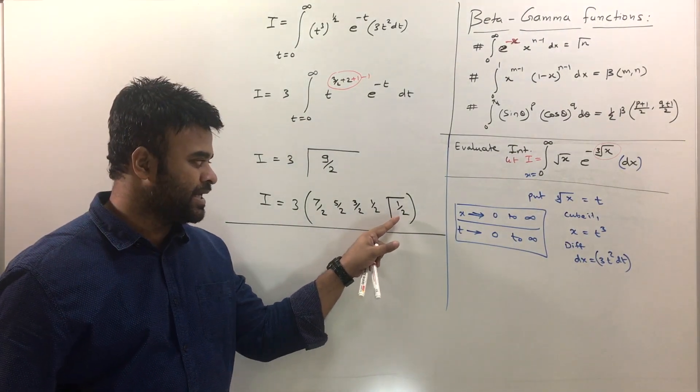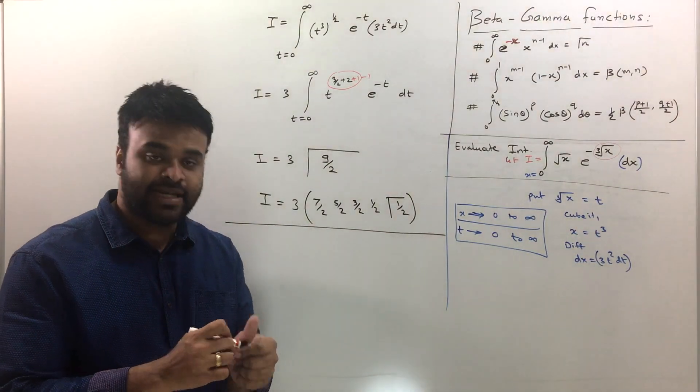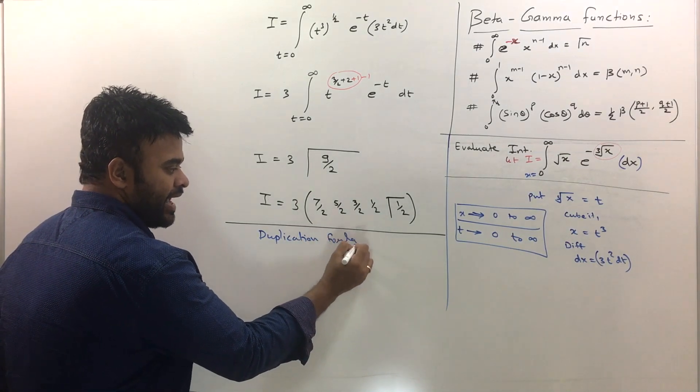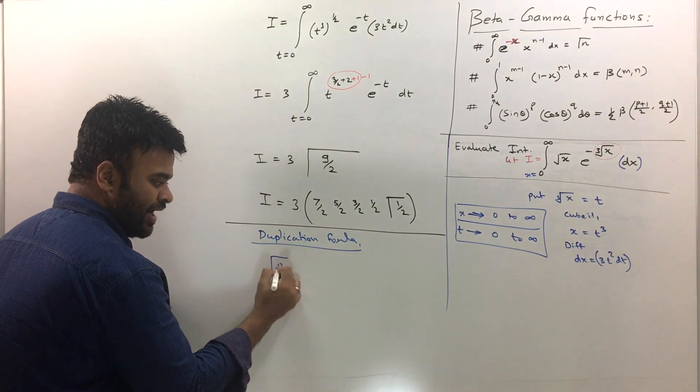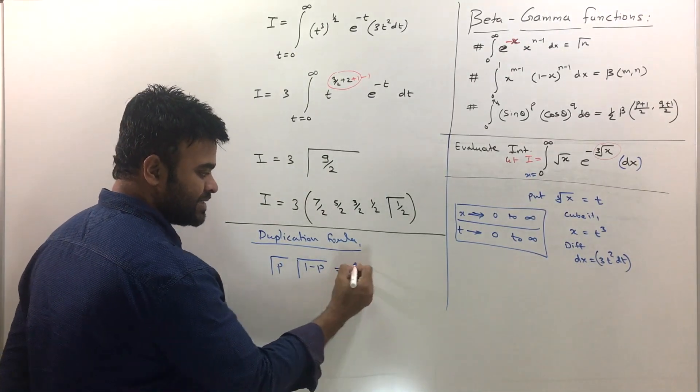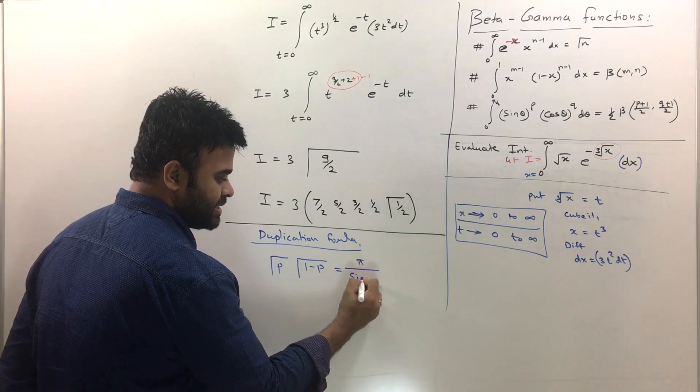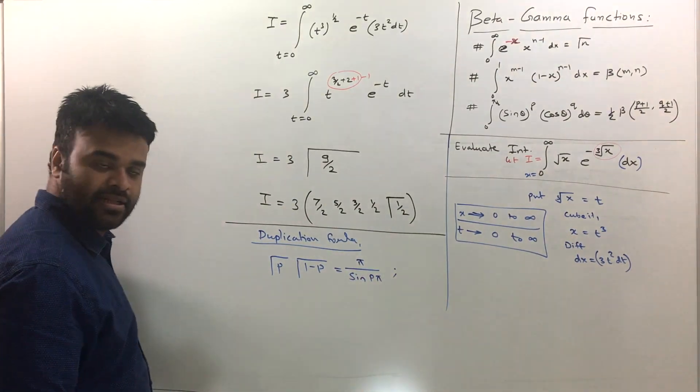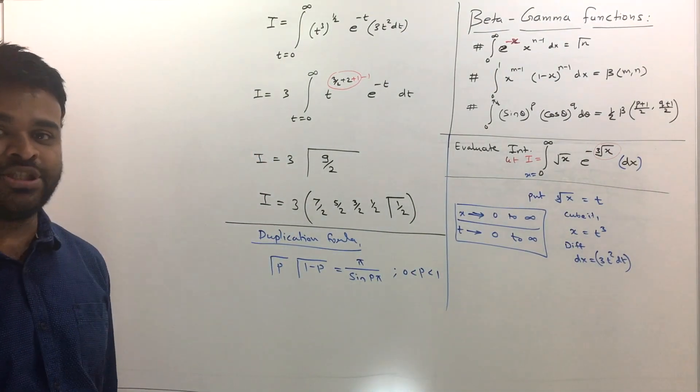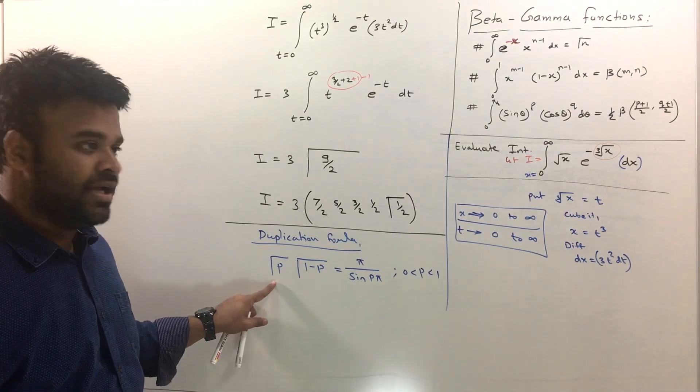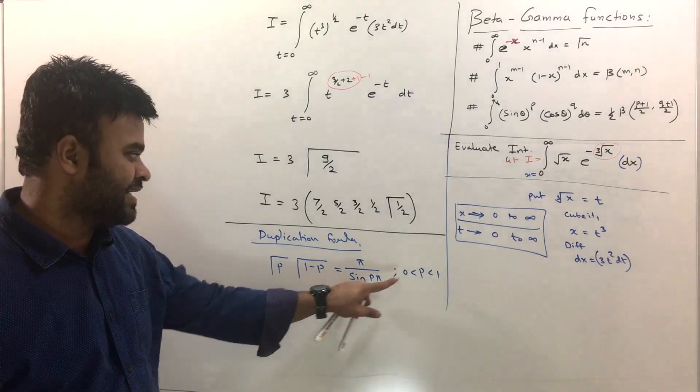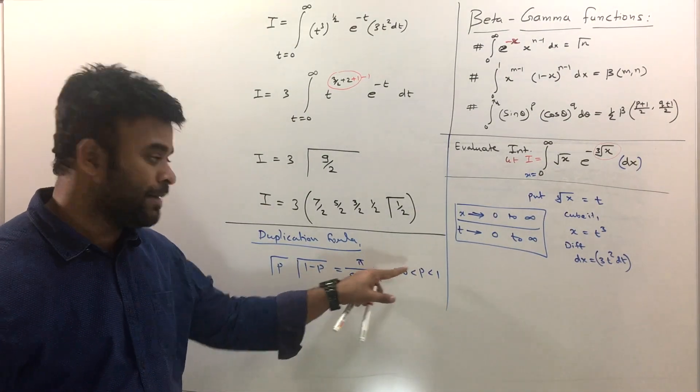See, there is something called as a duplication formula. Duplication formula. And the formula is like this. If you have gamma p, gamma 1 minus p, the value of this thing is pi upon sine p pi with a condition that your p has to be between 0 and 1. You need to remember the formula. The formula is called as duplication formula.